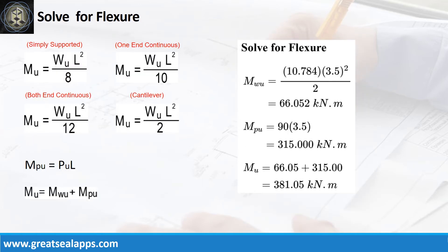Given factored uniform load equals 10.784 kN per meter, factored concentrated load equals 90 kN, and L equals 3.5 meters. The maximum moment from uniform load is 66.052 kN·m, and the moment from concentrated load is 315 kN·m, for a total maximum design moment of 381.052 kN·m.